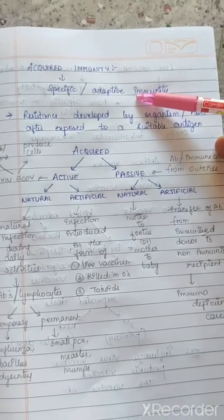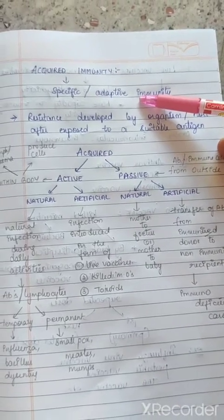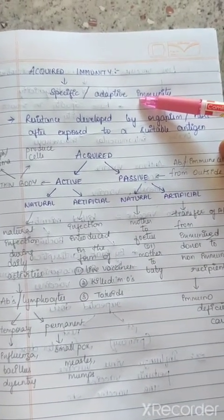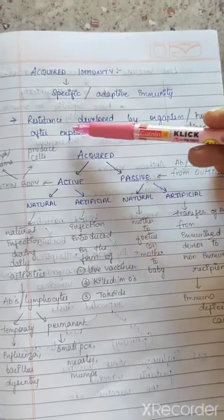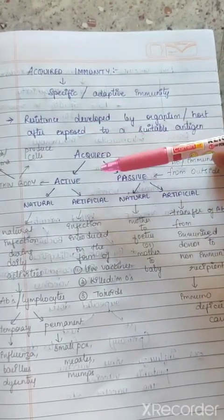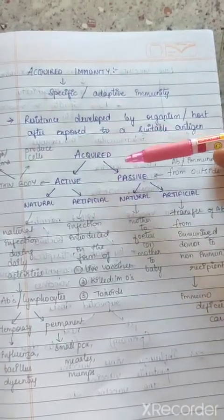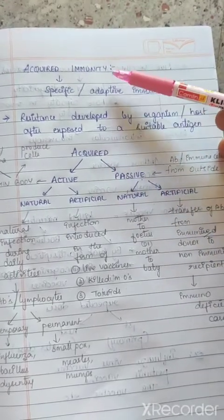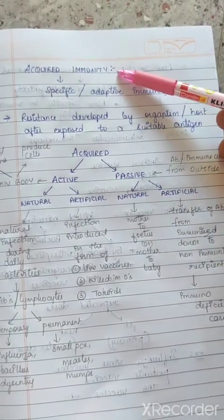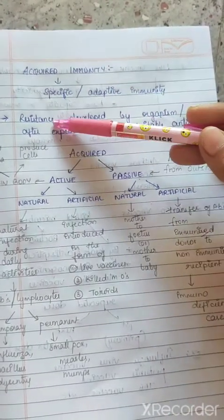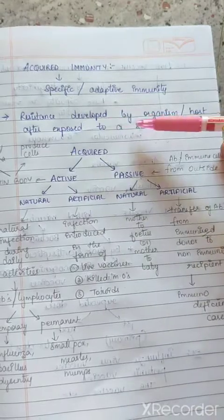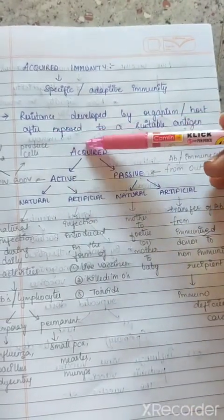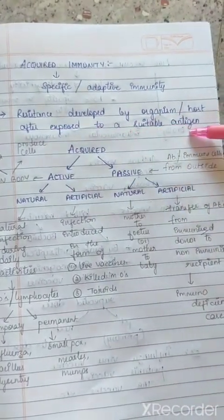This immunity will be developed within 6 to 8 days of infection. The definition of acquired immunity: acquired immunity is the immunity or resistance developed by an organism or host after being exposed to a suitable antigen.